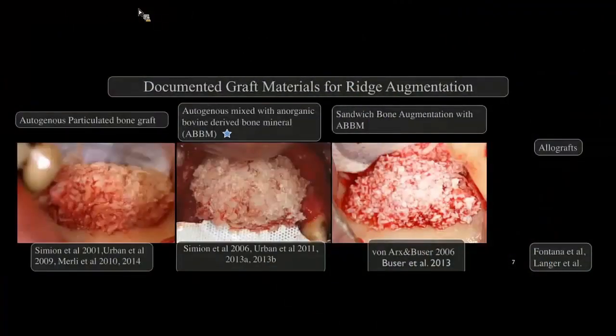When we're looking at different graft materials, we have a full spectrum of graft materials we can use. We have the autogenous bone that has been well articulated and documented for guided bone regeneration in a vertical defect.